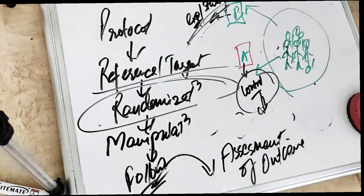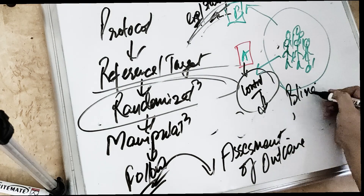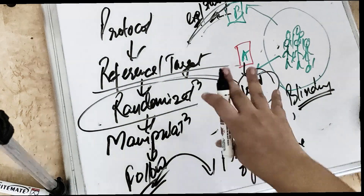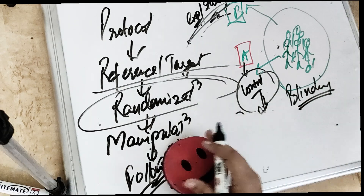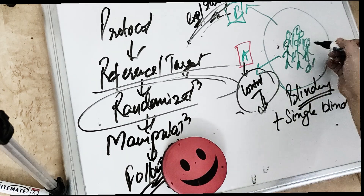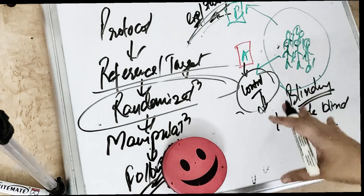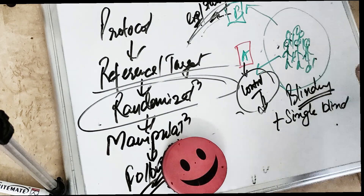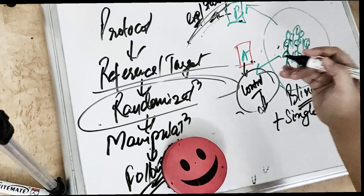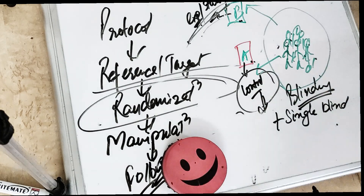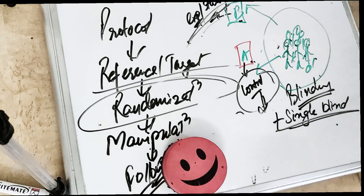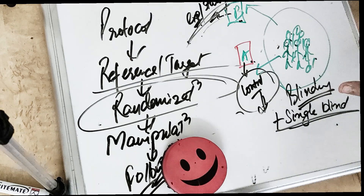Blinding is like placing a blindfold on your eyes — you have no idea. We have three kinds of blinding. The first is single blinding, which means the participants — our sample or target population — have no idea which group is going to be the experimental group and which is the control group. They don't know whether the drug is being tested on them or not. This is single blinding: the participant is not aware of which group they belong to.